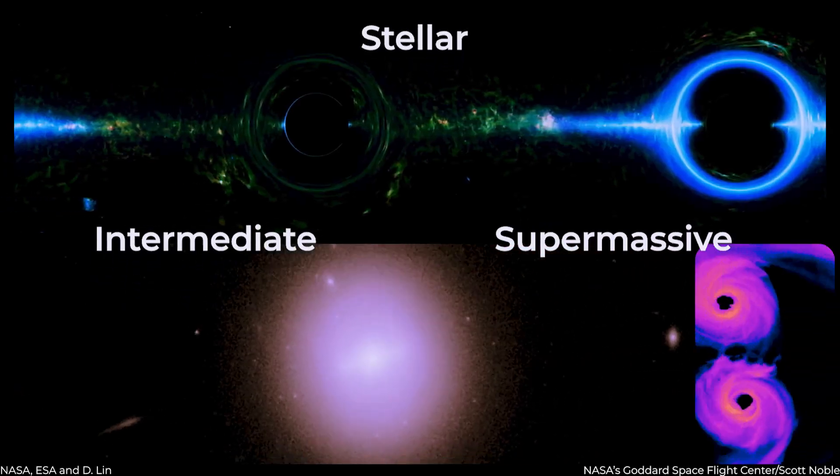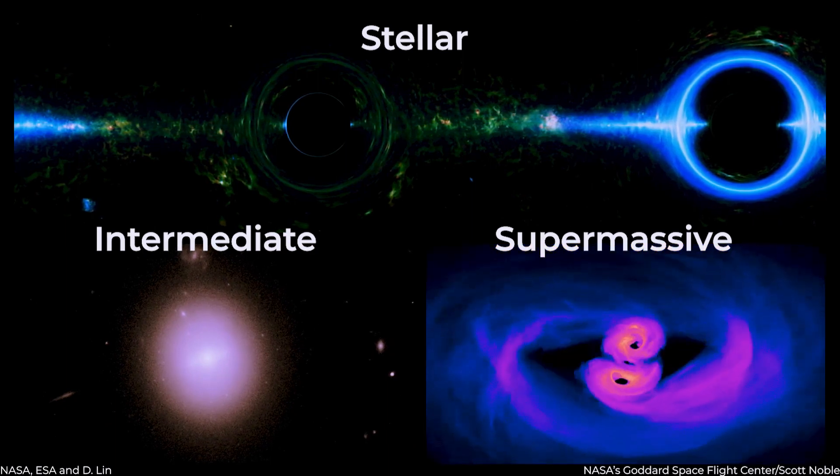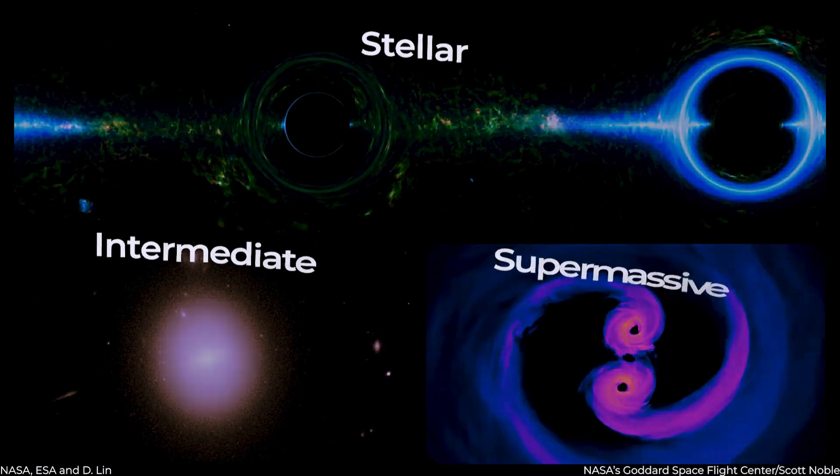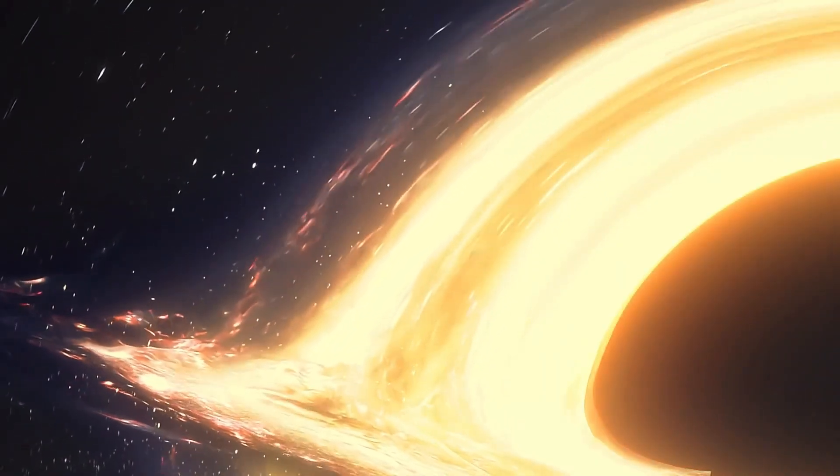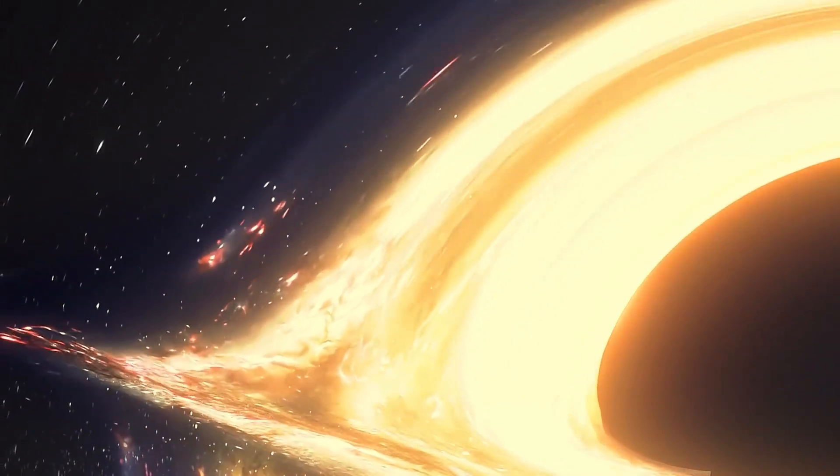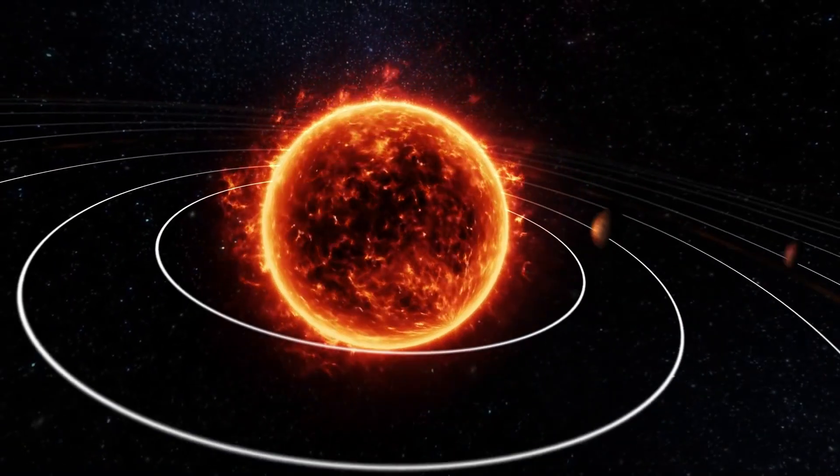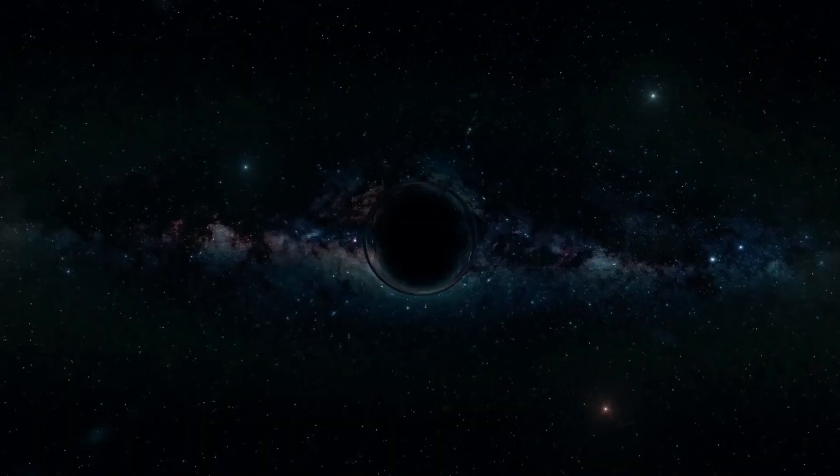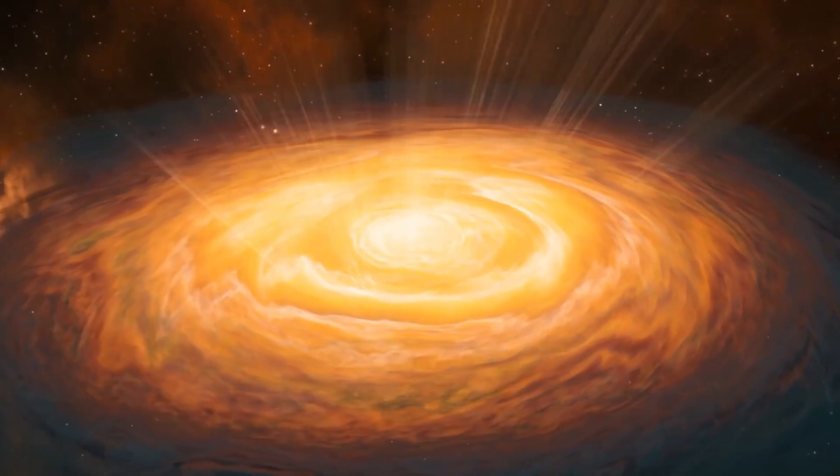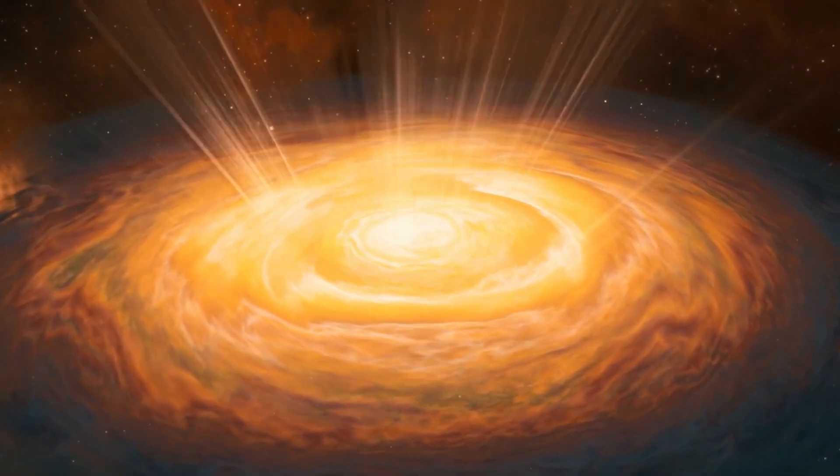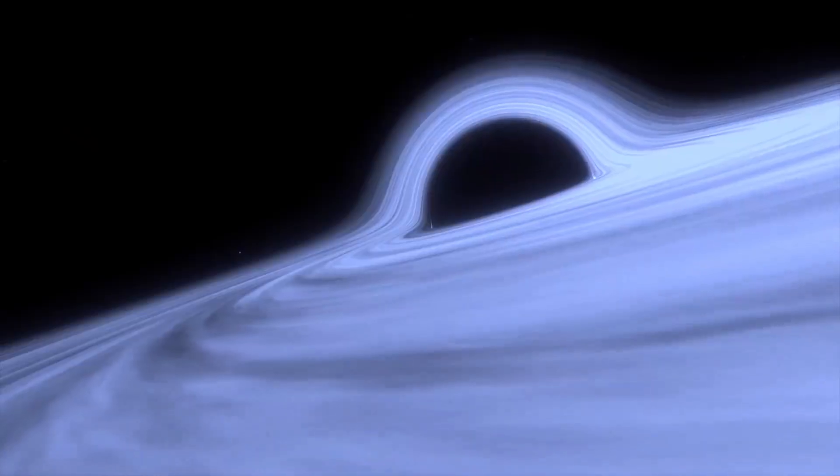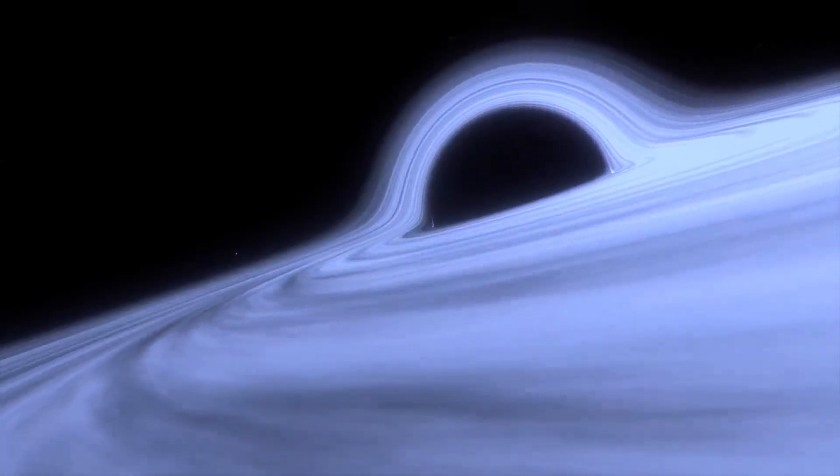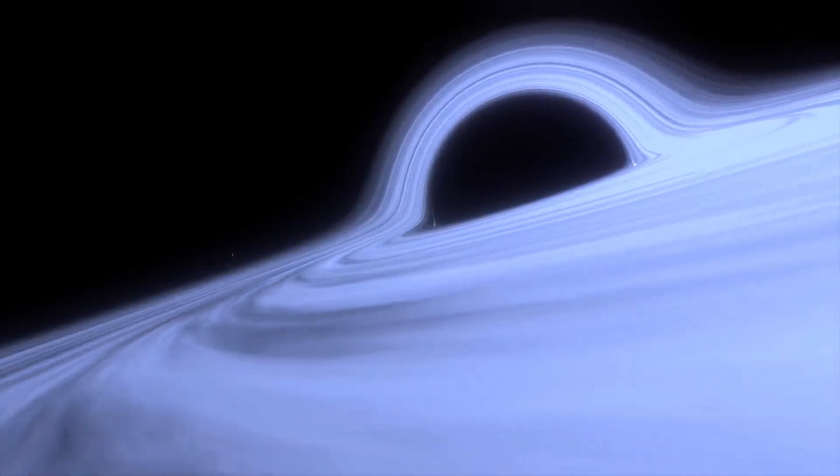There are three categories of black holes: stellar, intermediate and supermassive. Stellar black holes are the smallest, with masses of up to 20 times that of the Sun. Intermediate black holes have masses between 100 and 100,000 times that of the Sun. In contrast, supermassive black holes have millions or even billions of solar masses. They are located in the core of the majority of galaxies.